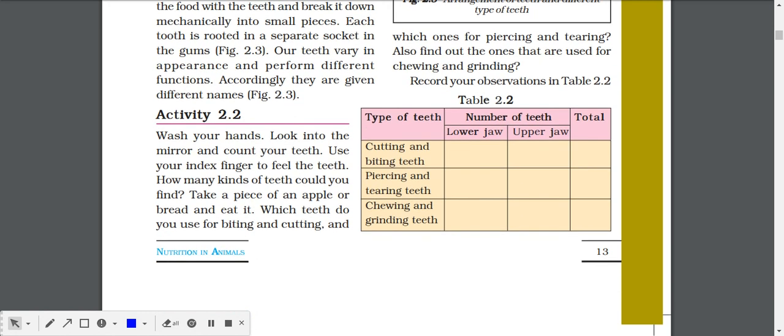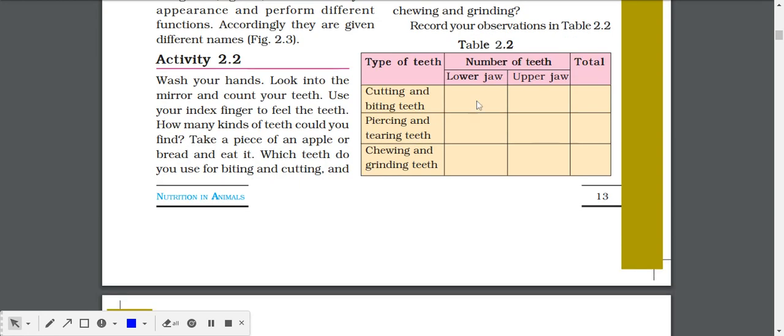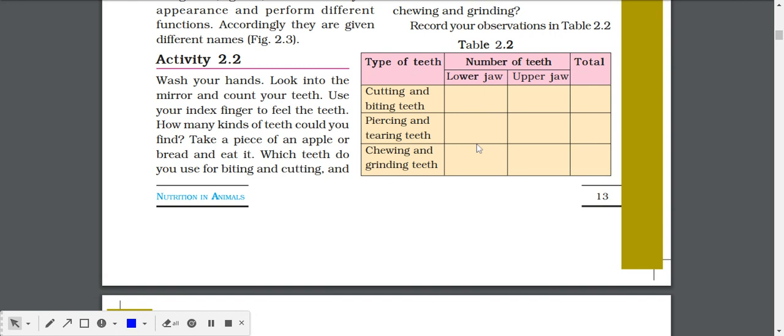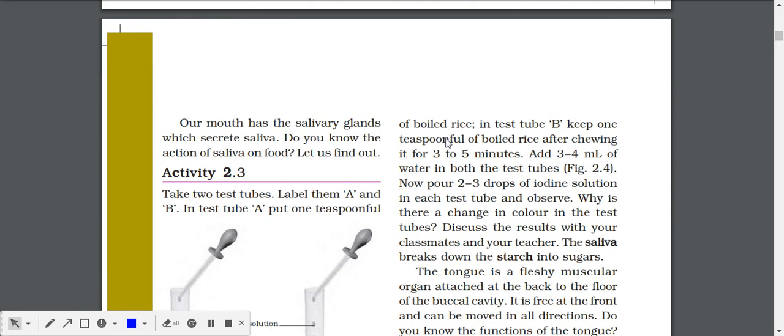This is Activity 2.2: Types of teeth, number of teeth in lower jaw, upper jaw, and total. You have to observe your teeth or you can observe your brother, sister, or parents' teeth and fill the table given here. That's a very interesting activity. Don't try to pull the teeth of your grandparents because they might have fewer teeth. Try to do it with a teenager or younger sibling. It will be quite interesting.